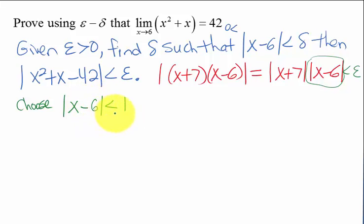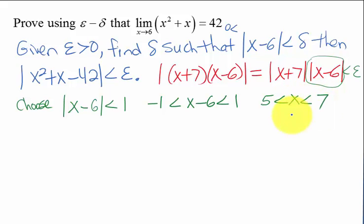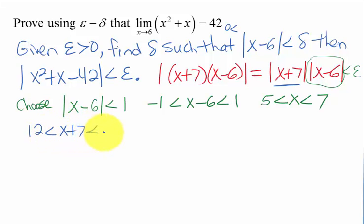So absolute value of x minus 6 less than 1 means, if we get rid of the absolute value, that x is between negative 1 and 1. Adding 6 to everything gives us 5 is less than x, which is less than 7. So we have the requirement that x be between 5 and 7. Now we want to figure out x plus 7, so we add 7 to everything in this inequality. That gives us 12 is less than x plus 7 is less than 14.